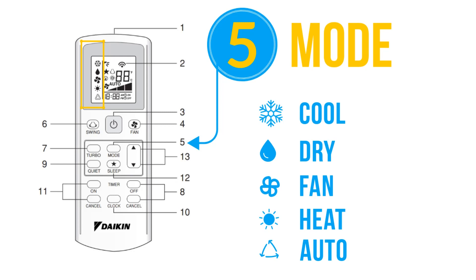In auto mode, Daikin AC will automatically decide to heat or cool by sensing the current temperature of the room, and you cannot adjust the temperature in auto mode. Use cool mode in summer to cool the room, and set temperature and fan speed as you like. In cooling mode, the snowflake symbol will be displayed.